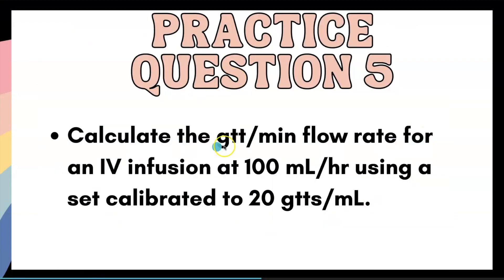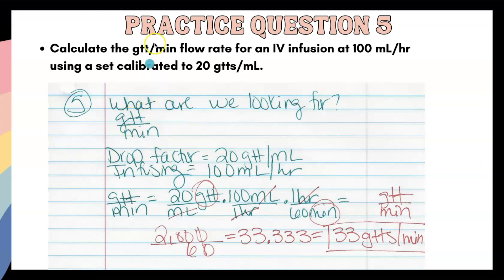Practice question number five, calculate the drop per minute flow rate for an IV infusion at a hundred miles per hour using a set calibrated to 20 drops per milliliter. What are we looking for? Drops per minute. We have a drop factor of 20 drops per milliliter infusing at a hundred milliliters per hour. 20 drops over milliliters times a hundred milliliters over one hour and one hour over 60 minutes. You divide 2000 by 60, you get 33.33. It stays the same because it's not greater than five. So you have 33 drops per minute.